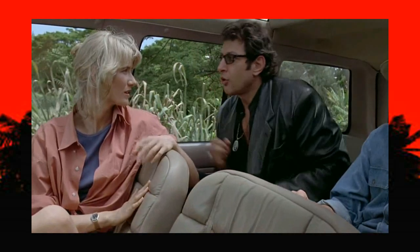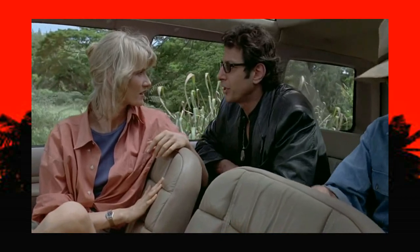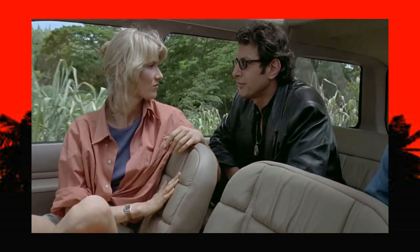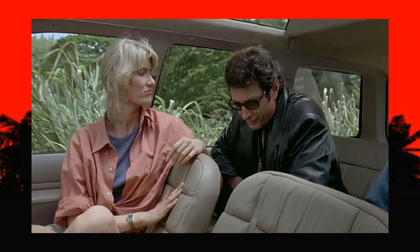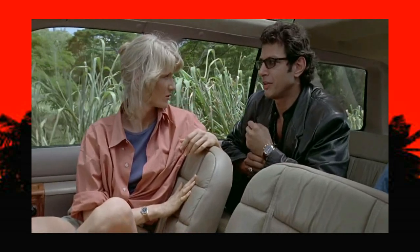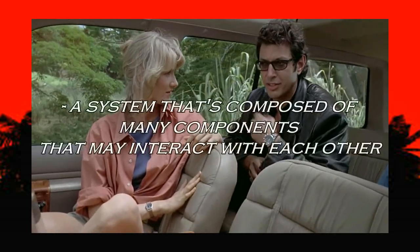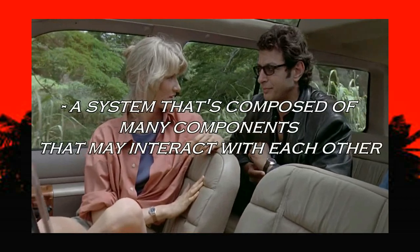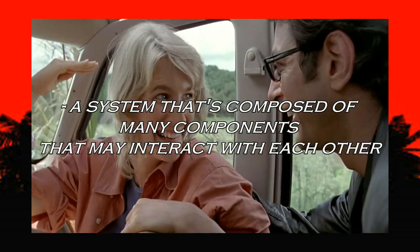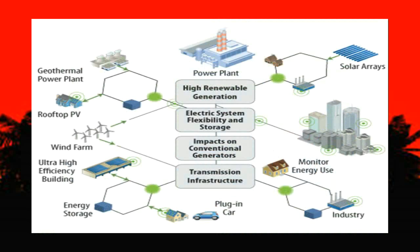In the Jurassic Park movie, Malcolm explains that Chaos Theory deals with unpredictability in a complex system. A complex system is essentially a system composed of many components that may interact with each other. Some examples include ecosystems or infrastructure.